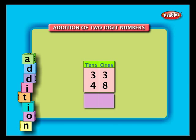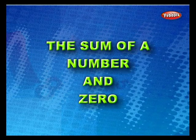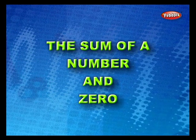Example two: add the numbers 33 and 48. Arrange them in columns. Add the ones column — three plus eight is eleven. We cannot write eleven below the ones column, so we write the ones digit of eleven, that is 1, below the ones column and carry over the tens digit of eleven, that is 1, to the top of the tens column. Now add the tens column — three plus four plus one (the carry-over) — we get eight. So 33 plus 48 is equal to 81.